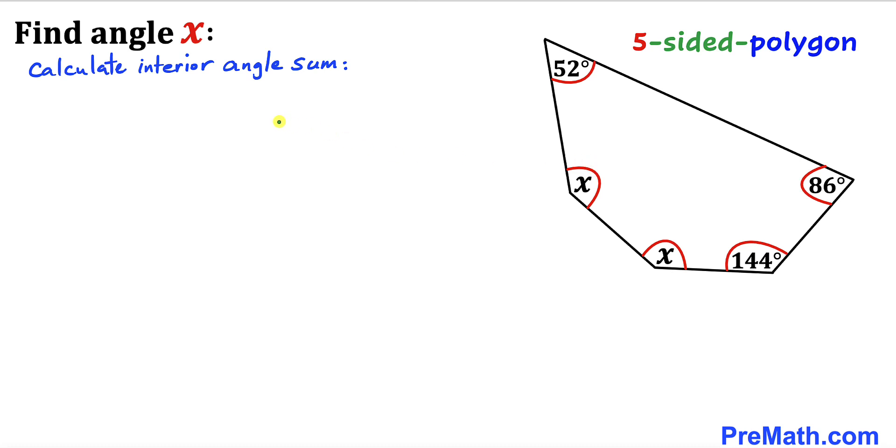So let's calculate the interior angle sum. Let's recall the interior angle sum formula: interior angle sum equals (n - 2) times 180 degrees, where n represents the number of polygon sides. In our case, n equals five sides.